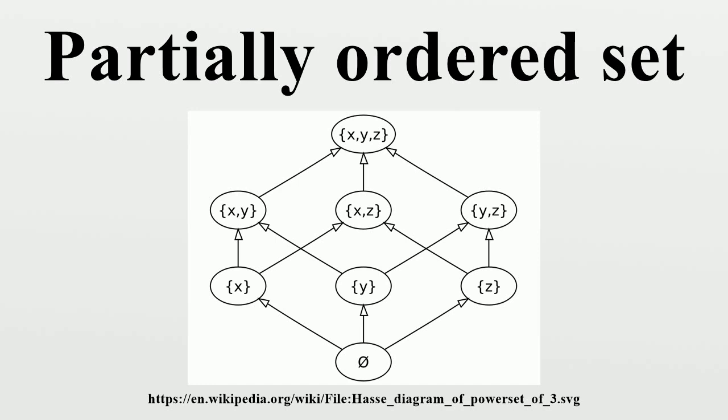Partial orders in topological spaces: If P is a partially ordered set that has also been given the structure of a topological space, then it is customary to assume that {(A, B): A ≤ B} is a closed subset of the topological product space P × P. Under this assumption, partial order relations are well-behaved at limits in the sense that if A ≤ Bᵢ and Aᵢ ≤ B for all i, then A ≤ B.